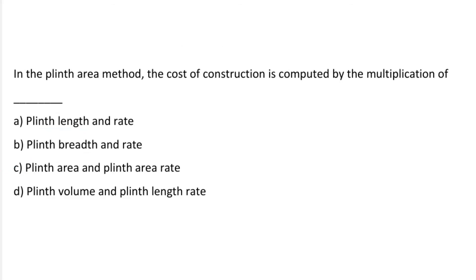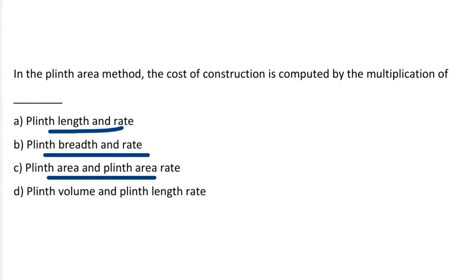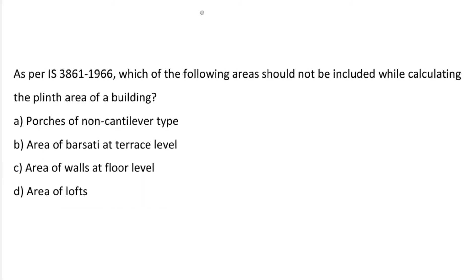Next question: in the plinth area method, the cost of construction is computed by the multiplication of — Option A: Plinth length and rate. Option B: Plinth breadth and rate. Option C: Plinth area and plinth area rate. Option D: Plinth volume and plinth length rate. The correct answer is option C, Plinth area and plinth area rate.